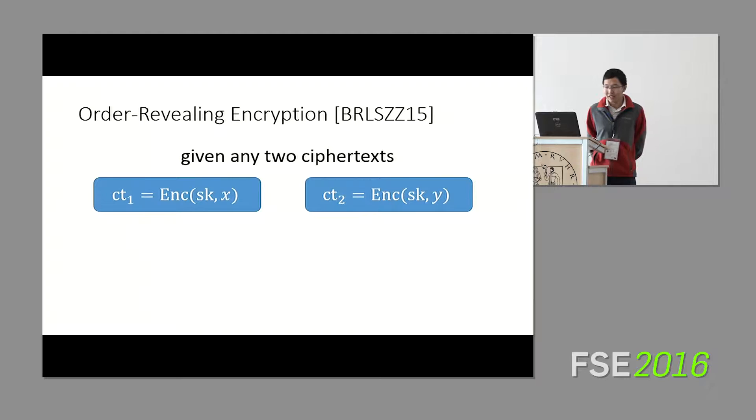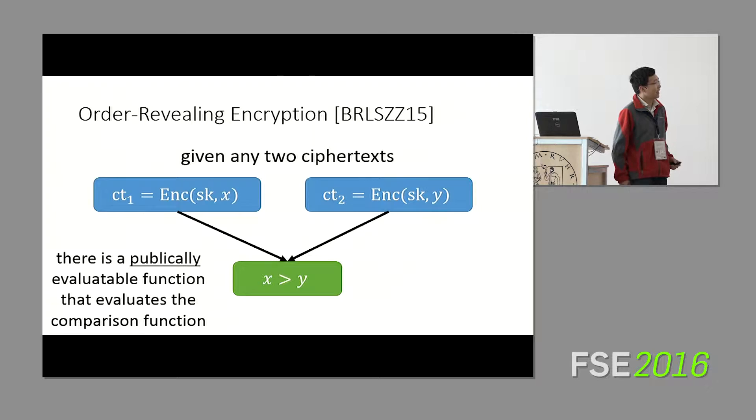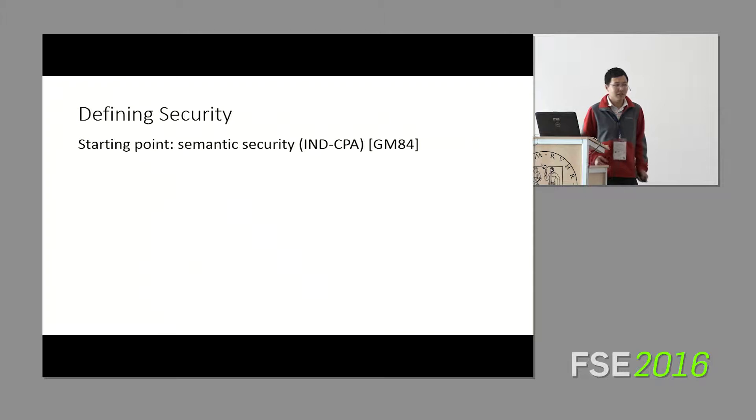To formalize this a little bit more, in an order-revealing encryption scheme, given any two ciphertexts encrypting numbers X and Y, there is a publicly evaluatable function that tells you exactly whether X is greater than Y or not. So the natural next question is, we have this new primitive, how do we define a meaningful notion of security for this primitive?